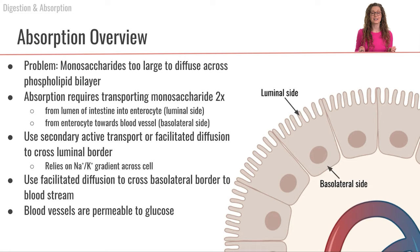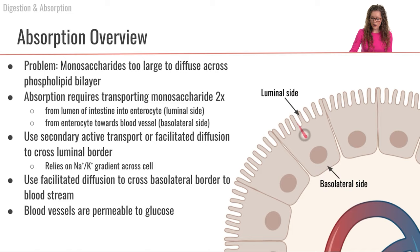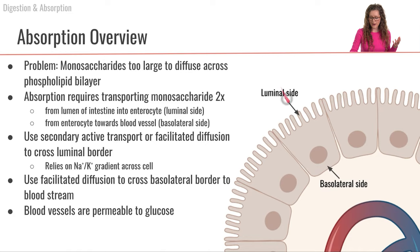Now we have digested our carbohydrates into their monosaccharide forms, and now we need to absorb them. We have to absorb these monosaccharides across two layers: first, across the luminal side of the enterocyte from the intestinal lumen, and then across the basolateral side of the cell to get into the blood vessel. If a monosaccharide gets stuck in the enterocyte, it would never reach our body, since we shed these enterocytes every three to four days.